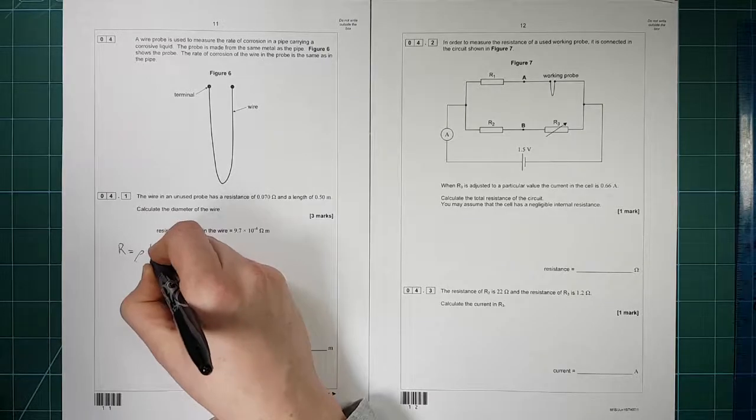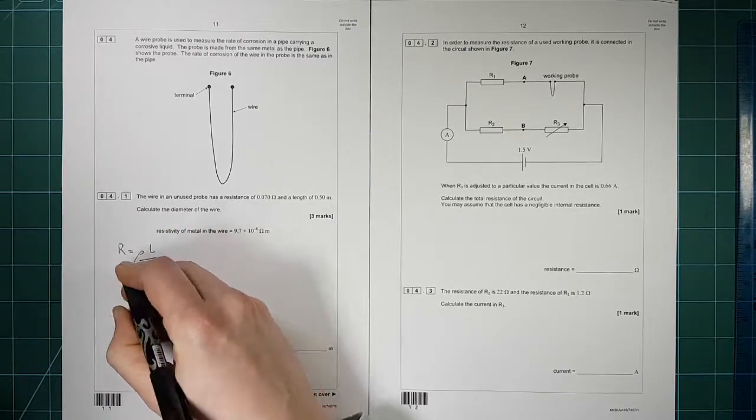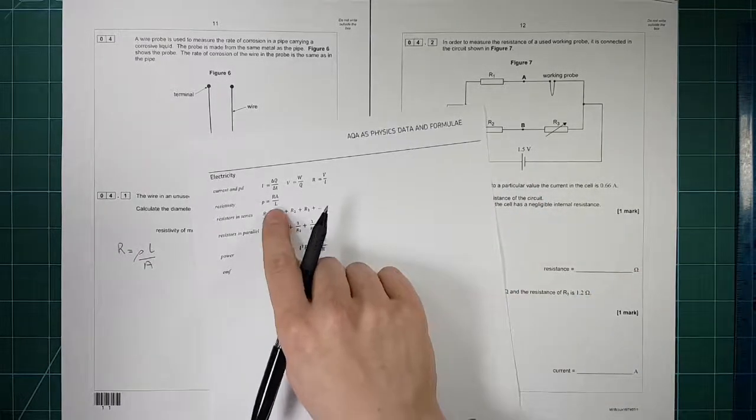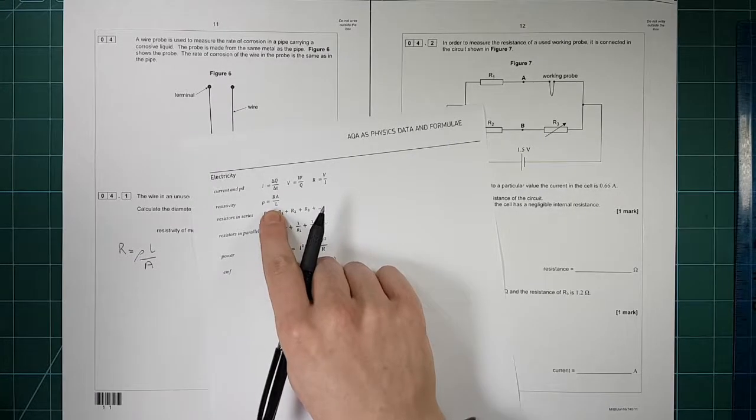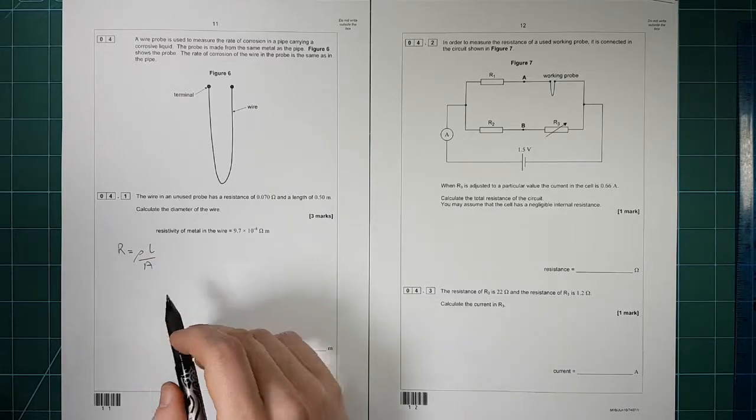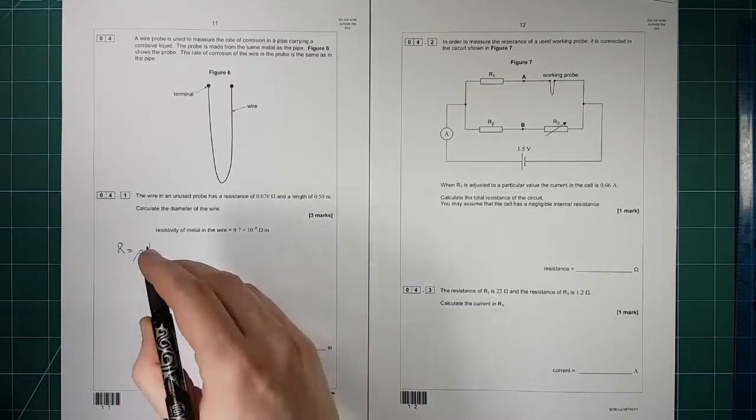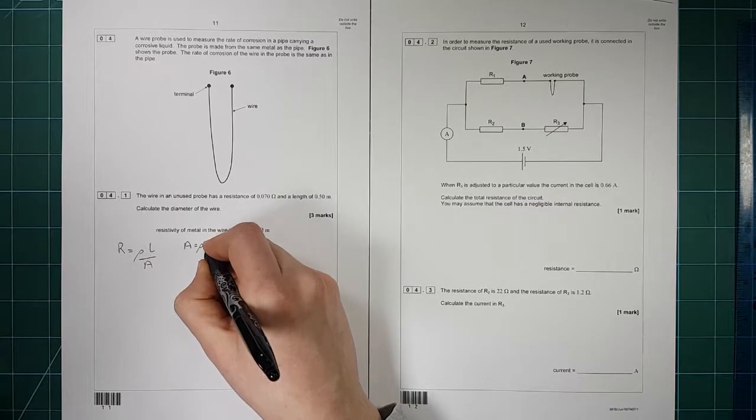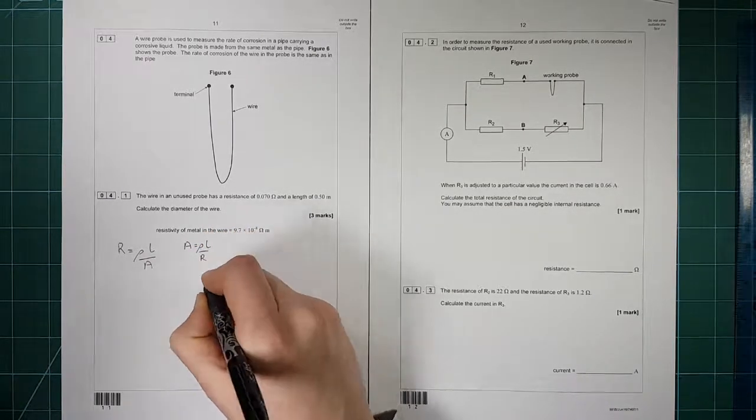R equals rho L over A, so that's the resistance of a wire as a function of its resistivity, which I've written in a slightly different way here, but that's the equation there on your formula sheet. So we want to find the diameter, so to find the diameter we need the area, so A is equal to rho L over R.